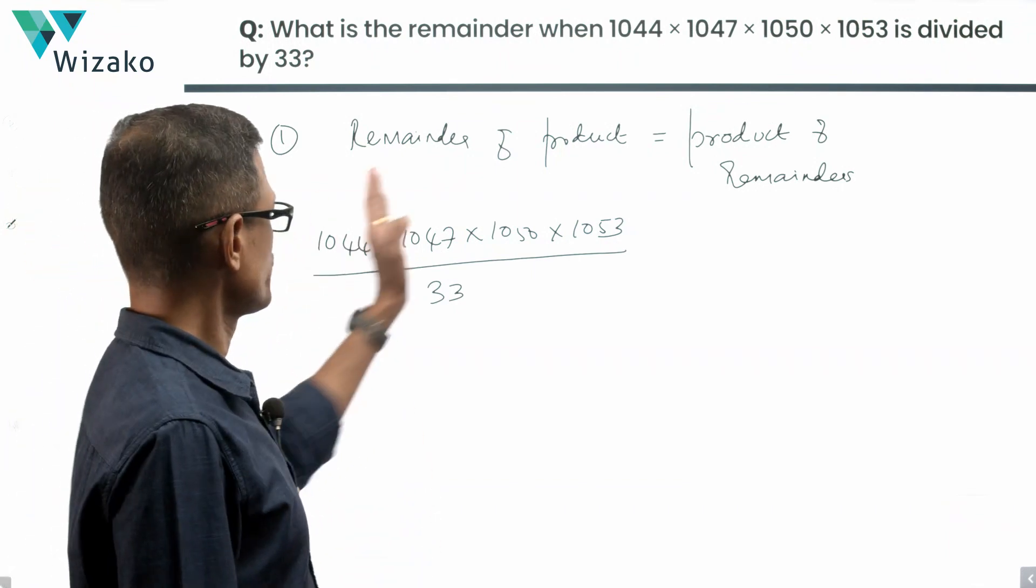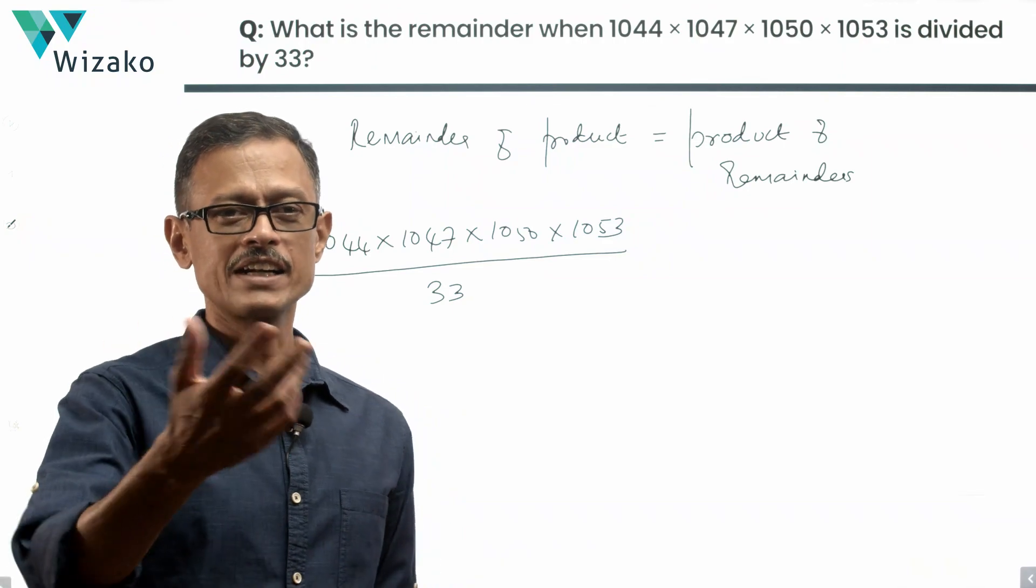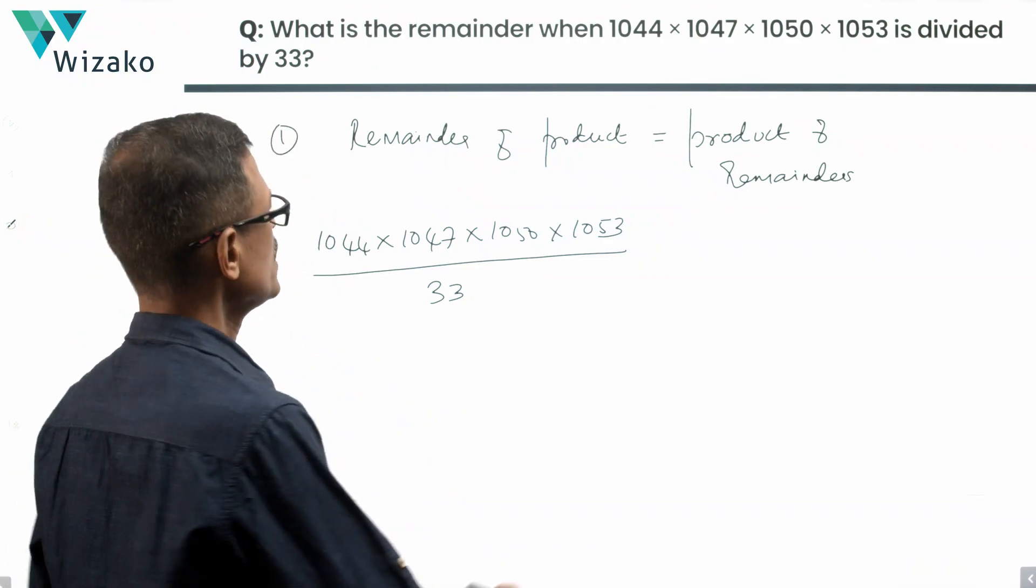One approach is to compute the value of this number divided by 33 and find the remainder, but that's cumbersome calculation-wise. If you had a calculator you would have done it in a jiffy, but we don't have a calculator.